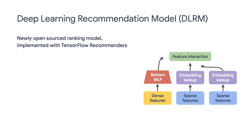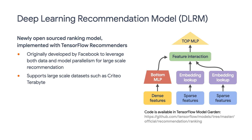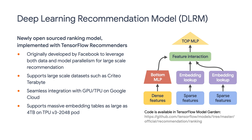In addition to the TF Ranking integration, I'm also very happy to let you know that we have released a new ranking model, DLRM, in TensorFlow Recommenders. DLRM stands for Deep Learning Recommendation Model, and it was originally developed by Facebook to tackle large-scale recommendation models by leveraging both data and model parallelism. DLRM is now part of the MLPerf Benchmark. Our DLRM implementation based on TFRS works seamlessly with GPU and TPU on Google Cloud and can support massive embedding tables as large as 4TB using the latest TPU chips. The DLRM code is available on tf.model.garden, and you can run it with the Criteo terabyte dataset right away. Feel free to check it out in the link below.